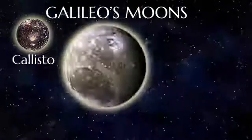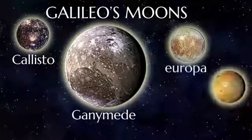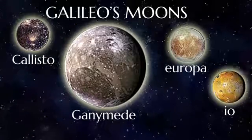Galileo was the first to discover the four moons in Jupiter and they are named Galileo's moons.